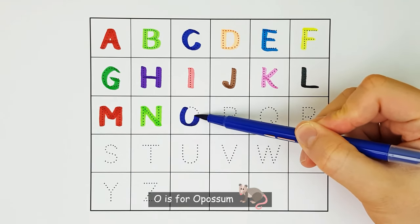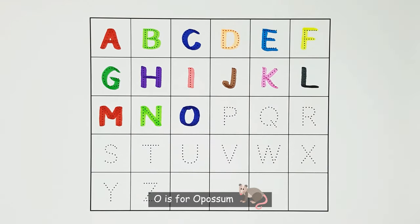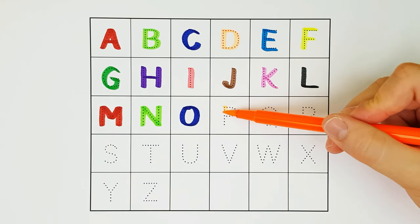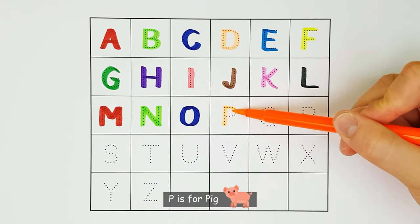O. O is for a person. O. P. P is for pig. P.